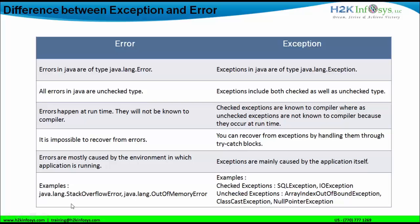Examples of errors are stack overflow error and out of memory error. Examples of checked exceptions include SQL exception and IO exception, which internally has file not found exception and end of file exception. Unchecked exceptions — that is, runtime exceptions — include array index out of bound, string index out of bound, class cast exception, null pointer exception, and arithmetic exception. This is the difference between exceptions and errors.